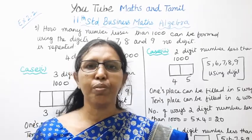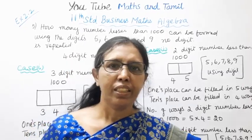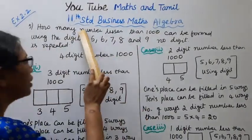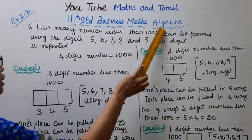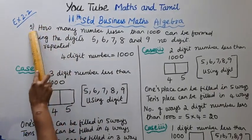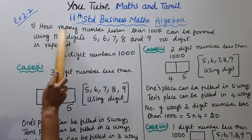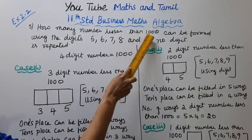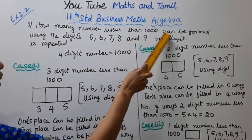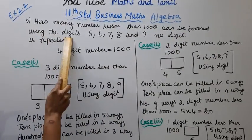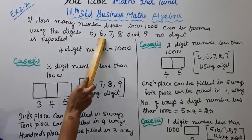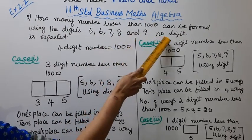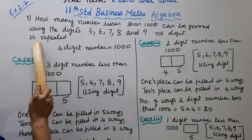Hello students, welcome to Max and Tamil channel. This is Business Algebra Exercise 2.257: How many numbers lesser than 1000 can be formed using the digits 5, 6, 7, 8, and 9? No digit is repeated.